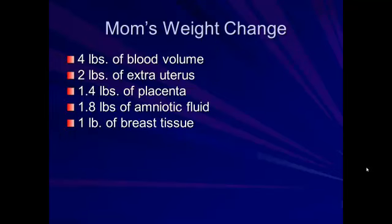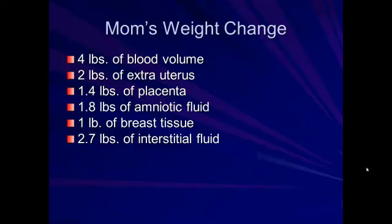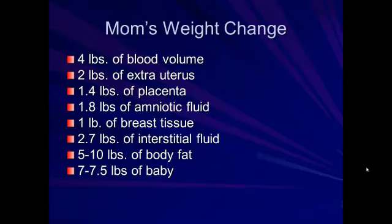Additionally, there's 1 pound of breast tissue in preparation for breastfeeding, and 2.7 pounds of interstitial fluid — the water within our cells. When a woman is pregnant she gets more interstitial fluid, which is why many pregnant women experience swelling of the feet, ankles, or lower legs, especially towards the end of pregnancy, as gravity pulls that extra water down. Five to ten pounds of body fat is also very normal to gain, and of course 7 to 7.5 pounds of baby, totaling 25 to 30 pounds overall.